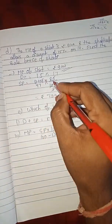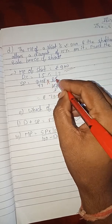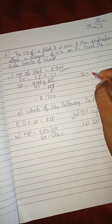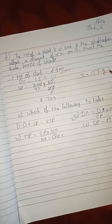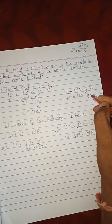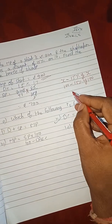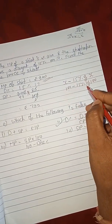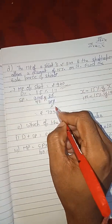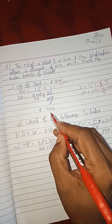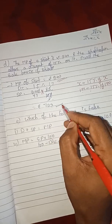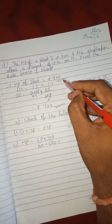In that question, MP of the shirt given is 940 rupees, discount is 15 percent, and selling price equals - we can find out that 940 into 85 by 100. But you know that we have to find out X minus 15 percent of X, same way 100 minus 15 percent of 100. So it will be 85. So directly we have written 85 by 100. By calculating the selling price, by cancellation you can get 799 rupees. It is the selling price.